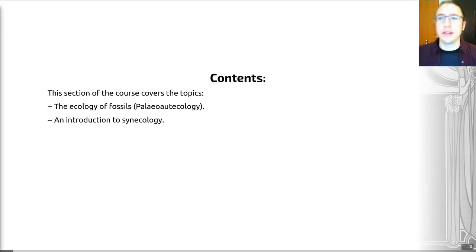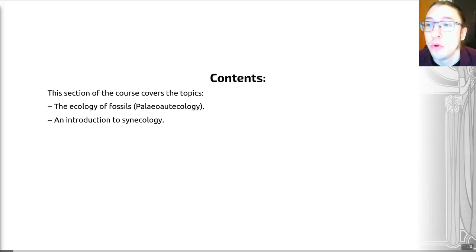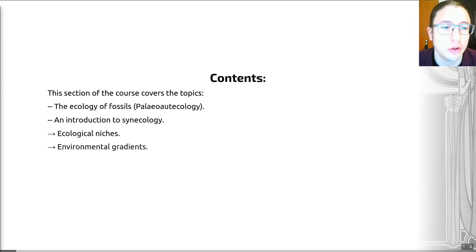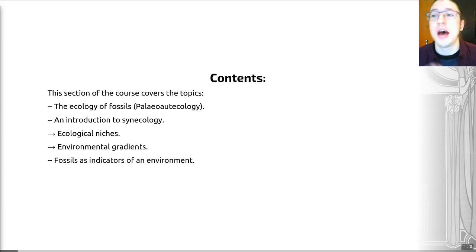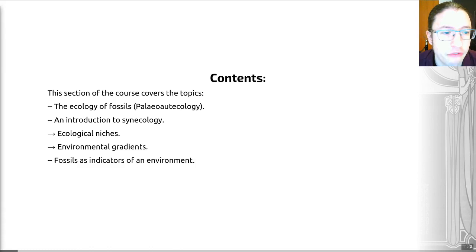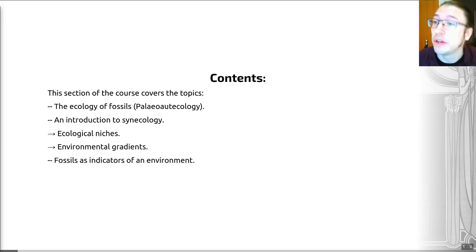We'll then zoom out a little bit and look more broadly at ecosystems in the past — not individual taxa, but how all of these different species coexisted with each other. We'll do that by looking at some important concepts such as ecological niches and environmental gradients. These are things that are true of both ecology and paleoecology, the only difference really being the time periods over which we're looking. We'll also touch on how fossils can indicate the environment of deposition of different rocks and how that helps us understand how animal communities have shifted through time.